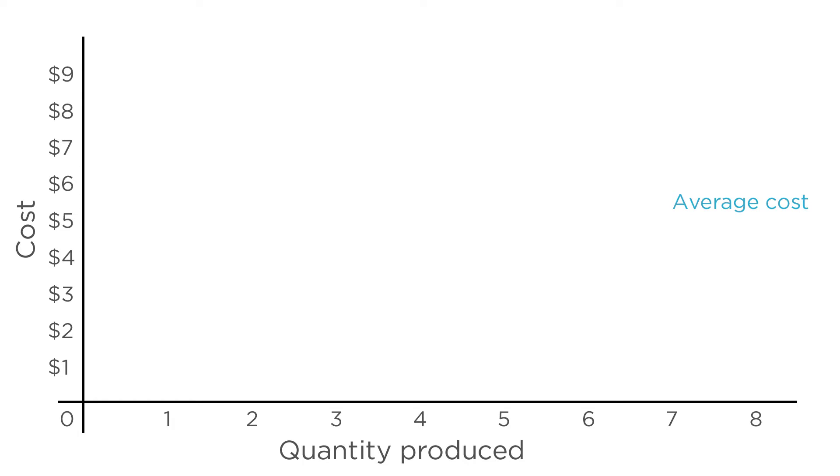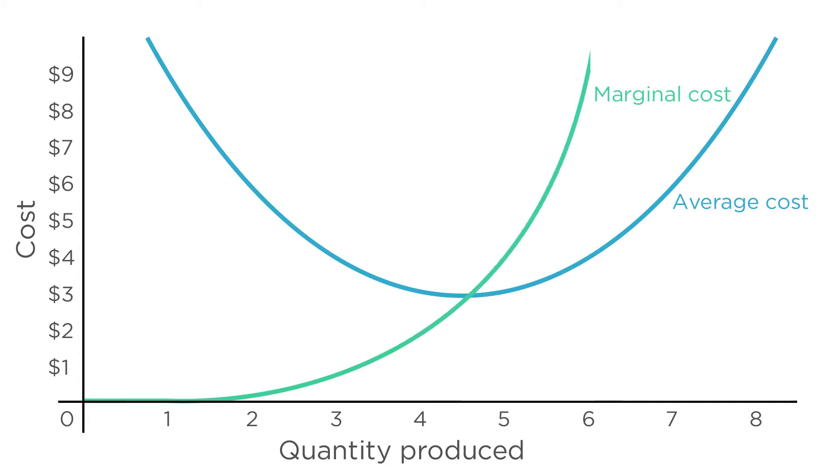First, let's draw the average cost curve. As we've seen already, this should have a U shape. We can also draw the marginal cost curve. Marginal cost starts low, but goes up due to diminishing marginal productivity. The marginal cost curve crosses the average cost curve at the very bottom of the U.